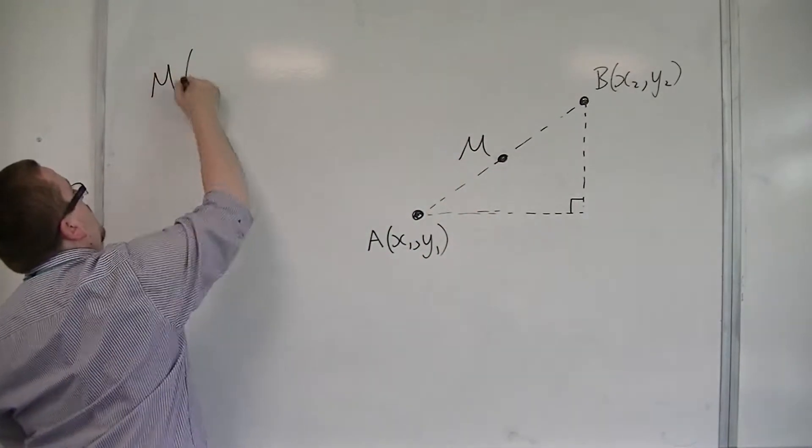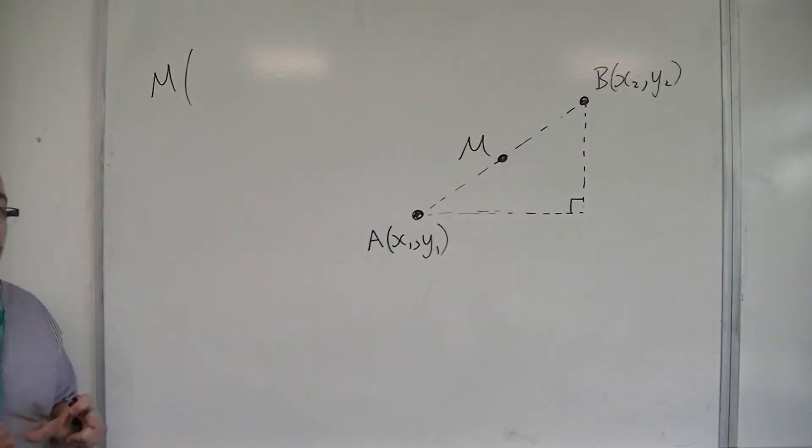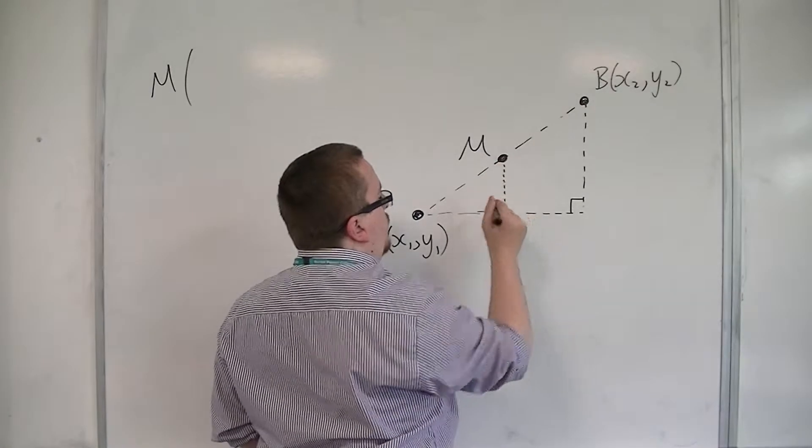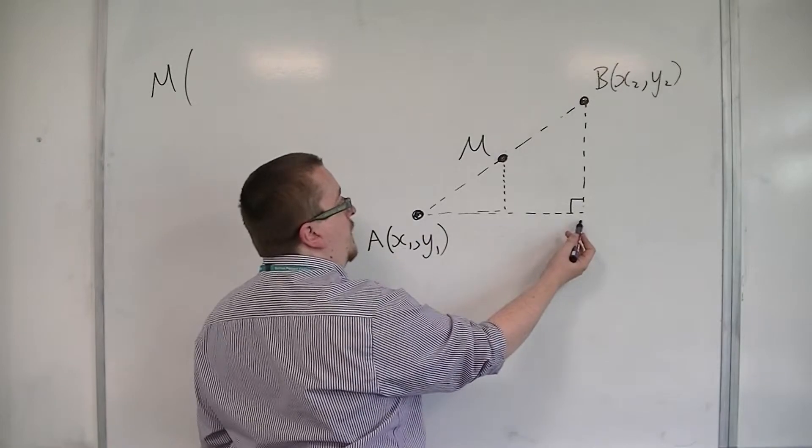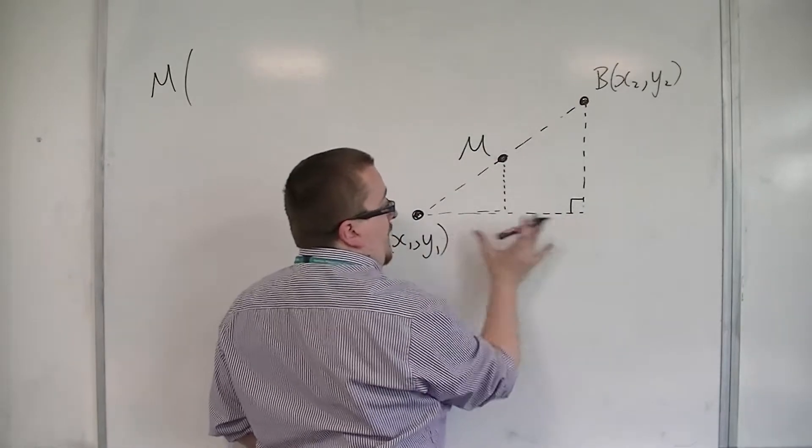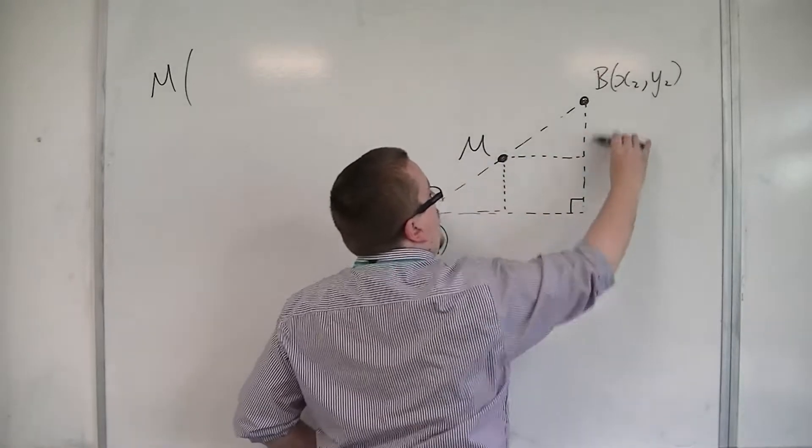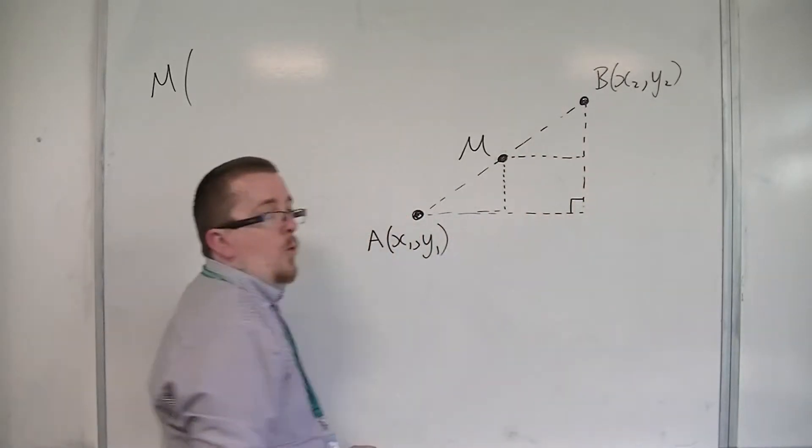So M, and I want to find the coordinates. M will be located halfway between x1 and x2 for its x-coordinate, and for its y-coordinate, it will be halfway between y2 and y1.